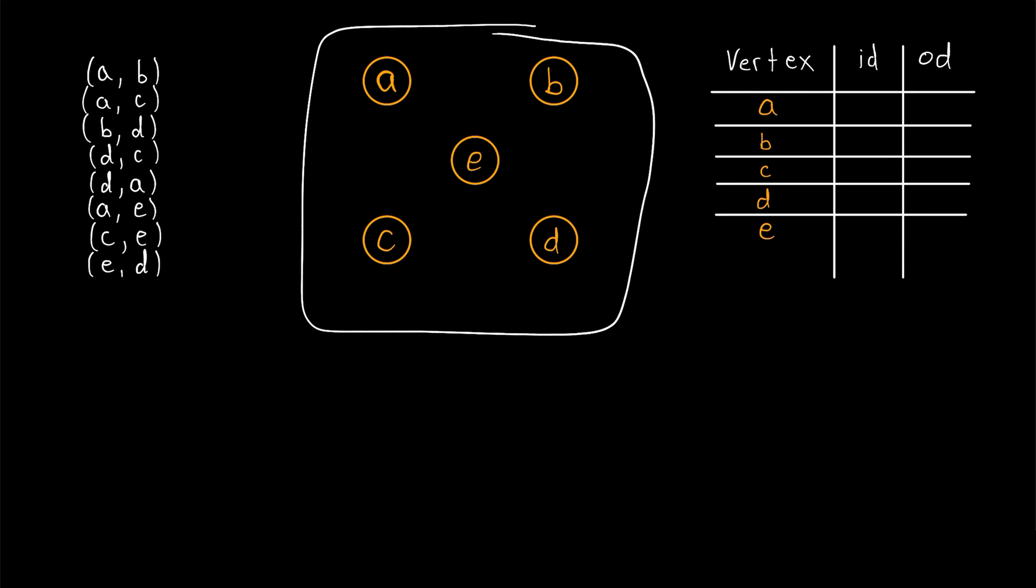Complete the drawing of this graph based on the provided set of arcs here. Then fill in this table, giving the in-degree and out-degree of each vertex. Give it a try now and then I'll quickly walk us through the solution.